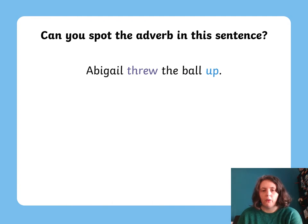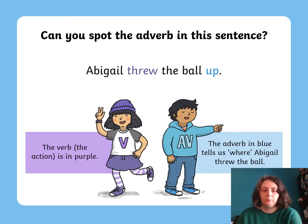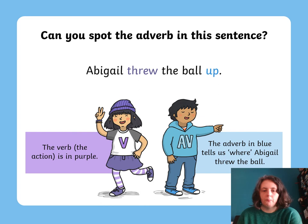Let's have a look at another one: 'Abigail threw the ball up.' What's the verb — the action — and where is the word telling us about it? The verb is in purple because she threw the ball. Then the blue word 'up' is the adverb because it tells us how she threw the ball — we could just say 'Abigail threw the ball,' but the word 'up' tells us in which direction.